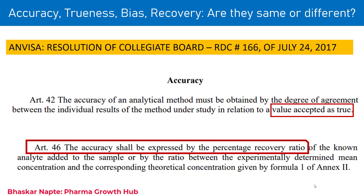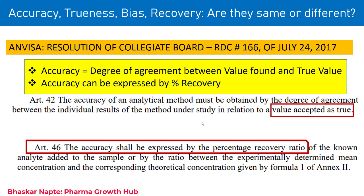Now according to the NVISA guideline, the accuracy of an analytical method must be obtained by the degree of agreement between the individual results of the method under study in relation to a value accepted as true. The second important point in the NVISA Brazil guideline is that accuracy shall be expressed by percent recovery. Accuracy is the degree of agreement between value found and true value, which goes hand in hand with the ICH definition.